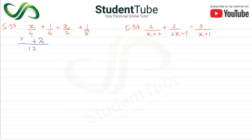So 3x multiplied gives 3x. On the right side, denominator 8 — 8 and 8 cancel, giving 1. And 2 goes into 8 four times, so we get 4x. So now we have 3x + 2 = 4x + 1 after simplification.